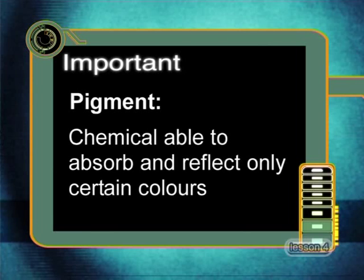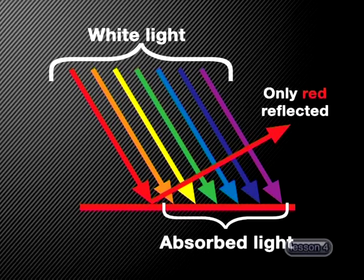We make use of these pigments in paints and dyes. We see an object as red because the chemical or pigment on its surface absorbs all the colors of the spectrum except for red. Red light is then reflected off the surface and we perceive the color of the object as red.